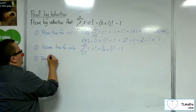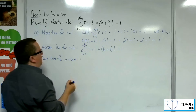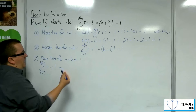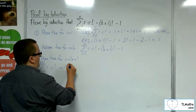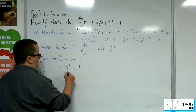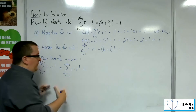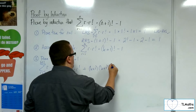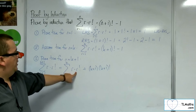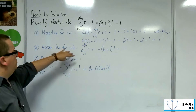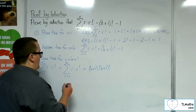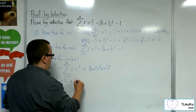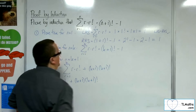Stage 3: prove true for N equals K plus 1. Rewriting the sigma notation, R times R factorial from R equals 1 up to K plus 1. We split this summation up — it's the summation from R equals 1 to K, plus the K plus 1 term substituted into R times R factorial, giving K plus 1 times K plus 1 factorial.